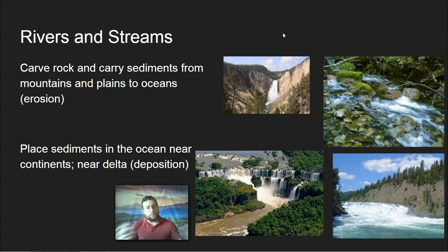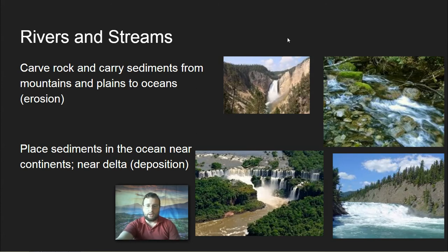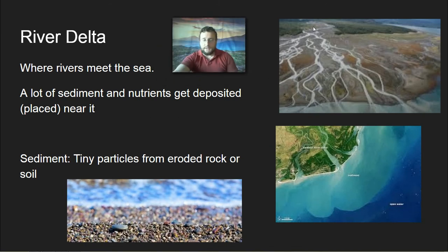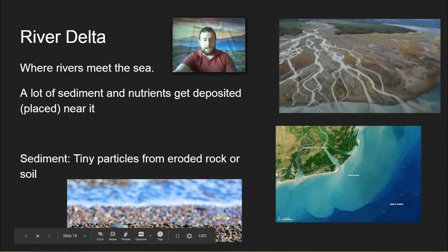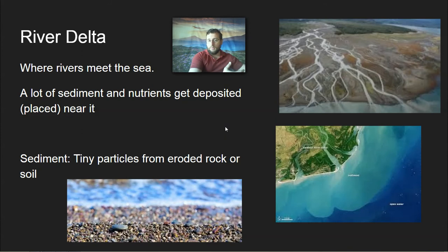Rivers carry sediments and usually deposit them into the sea. Sediments can also be carried by wind — sand from the Sahara Desert can be transported to the opposite side of the world by wind currents — but rivers are the primary source of carrying sediments across the world and eroding continents. River deltas are where rivers meet the sea, and there you see large amounts of sediment gathering. The mouths of the Mississippi and Amazon rivers are great examples, where tiny particles of rock and sand are deposited.